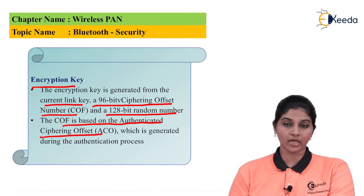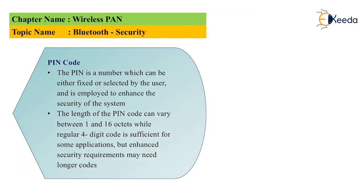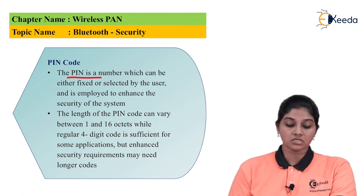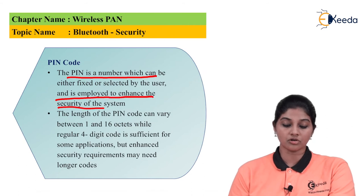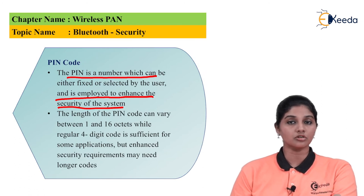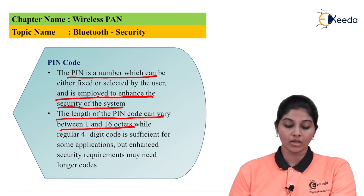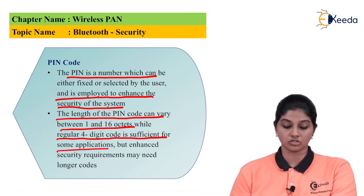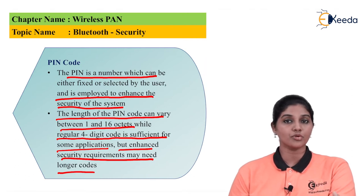The PIN is a number which can be either fixed or selected by the user, employed to enhance security. Whenever Bluetooth pairing takes place, the PIN number is required to be entered into the device so that authentication and authorization can take place. The length of the PIN code can vary between one to sixteen octets, whereas a regular four-bit code is sufficient for certain applications, but enhanced security requirements require a longer code.